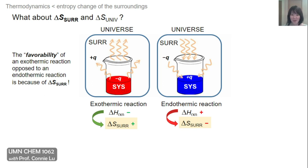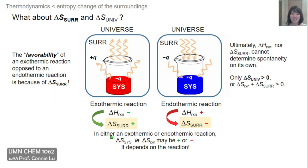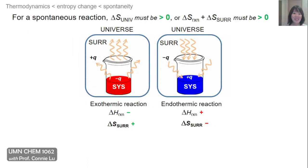Remember, enthalpy and entropy change of the surroundings cannot predict spontaneity on their own — we must consider delta S of the reaction plus delta S of the surroundings to get delta S of the universe. Whether a reaction is exothermic or endothermic has no relationship to the entropy change of the system; delta S of the system can be positive or negative in either scenario.